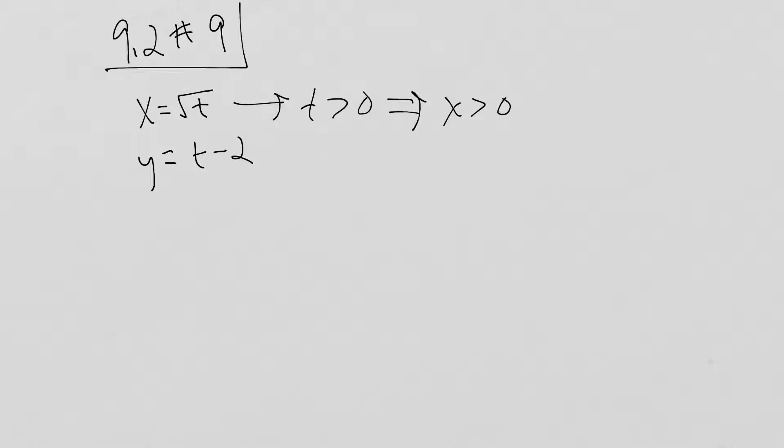So let's take our first step for eliminating the parameter. My parameter is t here. I square both sides on that x equation. I get x squared equals t. I just have to keep that in mind. Then this t is going to come in here, and that gives me y equals x squared minus 2. All I did was replace that with this because it's t.